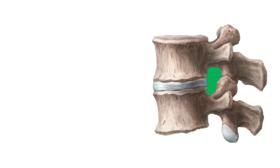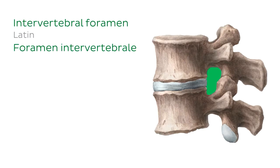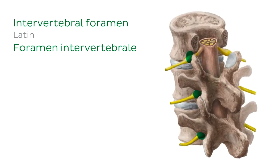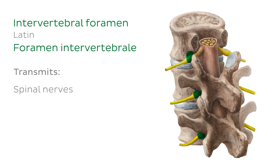Let's have a look at the intervertebral foramen. It is formed between two vertebrae — by the inferior vertebral notch of a superior vertebra and the superior vertebral notch of an inferior vertebra. It is a bilateral structure found on both sides of the vertebral column, and the intervertebral foramina transmit the spinal nerves.